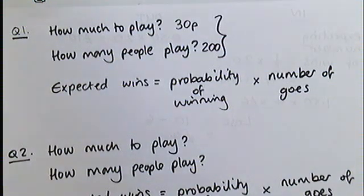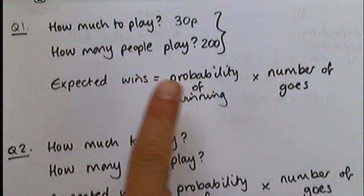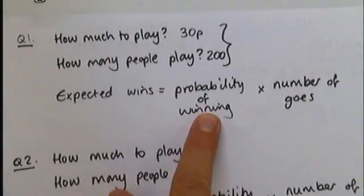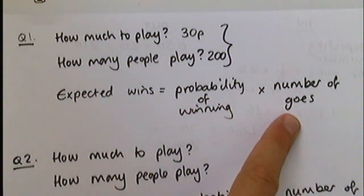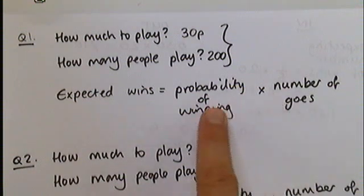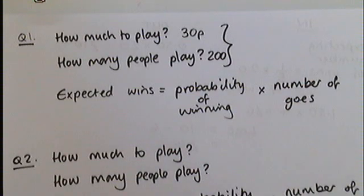Second of all, can you try to work out how many wins there would be in this game? Remember, this is the probability of winning, which I think is given to you. See if you can find out in the question. Multiply by the number of goes. If you can do this formula, if you can multiply those two together, that's going to get you a second mark.